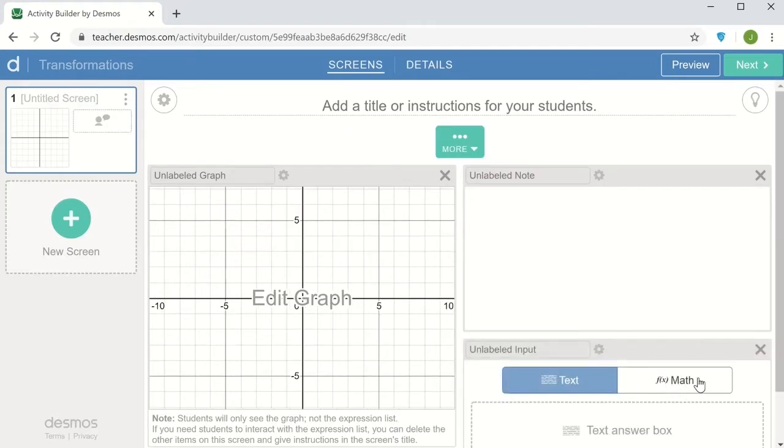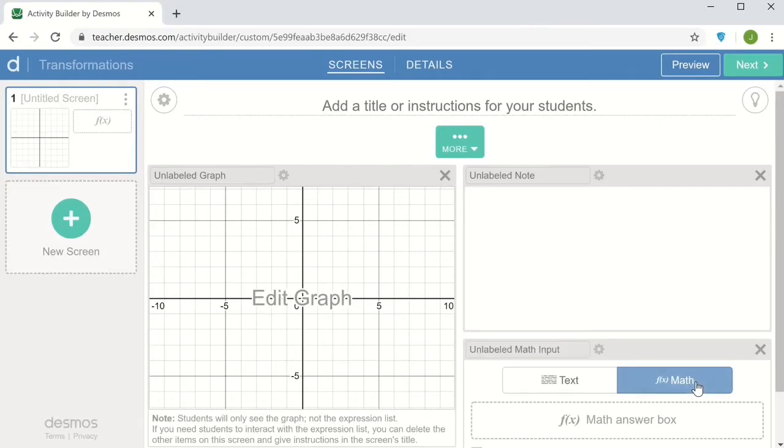I'm going to change the student input to a math format because I want the student to input a formula that will then show up on the graph. So the question to prompt the student will be about a transformation. The function, and now to name the function, I'm going to call it g of x.